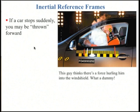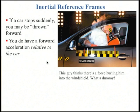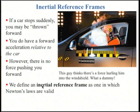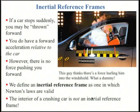If a car stops suddenly, you might get thrown forwards towards the steering wheel. You do have a forward acceleration relative to the car; however, there's no force pushing you forward. We define an inertial reference frame as one in which Newton's laws are valid. Inside a decelerating car this is not an inertial reference frame — the dummy thinks there's a force hurling him towards the airbag, but in reality he's just carried along by his inertia while the car accelerates backwards.